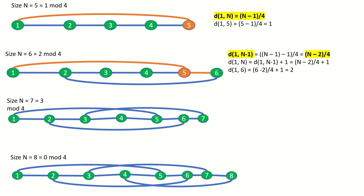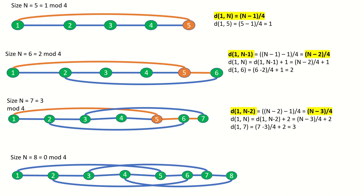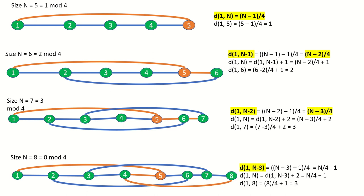For n equals 7, or 3 mod 4, we can get to the third-to-last vertex in one step or the last vertex in three steps, which is n minus 3 over 4 plus 2. And finally when n equals 8, or 0 mod 4, we can get to the fourth-to-last vertex in one step. But then watch what happens — we can step backwards and then skip 4 ahead to get to the last vertex. This means that we can get to the last vertex in n over 4 plus 1 steps, or in this example three steps.